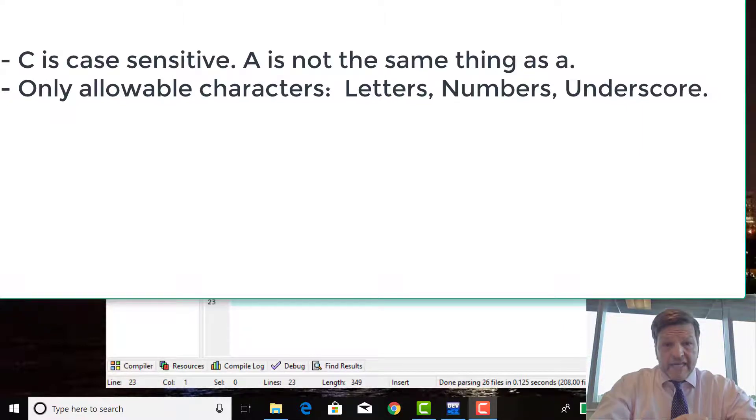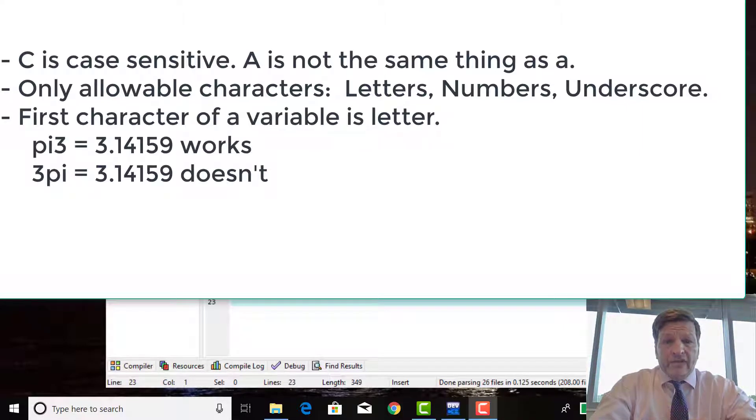The other thing is that letters have to be the first character of a variable name. In this example here, pi3 = 3.14159, that's an okay statement in C. But 3pi = 3.14159, that is not okay. That would come up as an error. C would think you're trying to call it a number, some kind of number thing, not a variable.